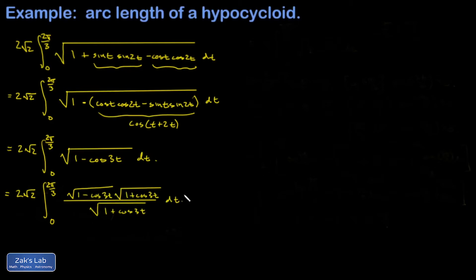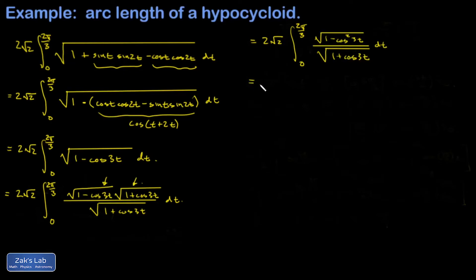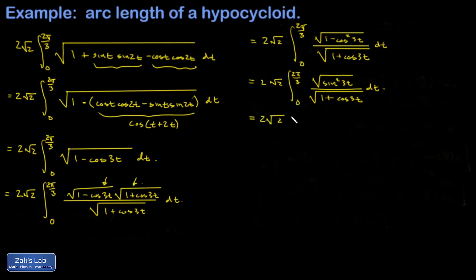The point of the conjugate, like all conjugates, is to intentionally build a difference of two squares in the numerator and then use a Pythagorean identity to clean it up. Multiplying the interiors of the square roots gives 1 − cos²(3t) = sin²(3t). However, the square root of sin²(3t) is not simply sin(3t) — it's |sin(3t)|, since the square root is always positive. If sin(3t) is negative, we'd need to adjust by a minus sign.